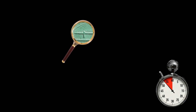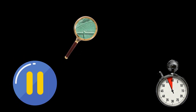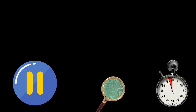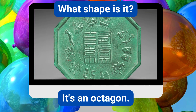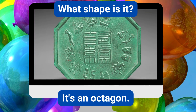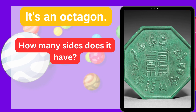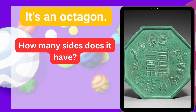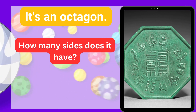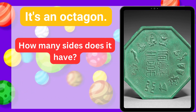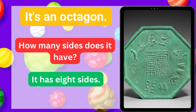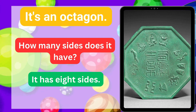What shape is it? It's an octagon. How many sides does it have? It has 8 sides.